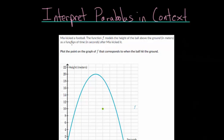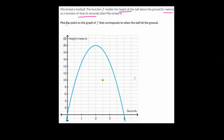Mia kicked a football. The function f models the height of the ball above the ground in meters as a function of time in seconds. So it's height for our function, and time for our independent variable. You're going to see this type of graph pretty much any time you have projectile motion. If you've learned this in physics, when you throw a ball or shoot a cannon or throw anything through the air, it's going to travel in pretty much a perfect parabola, but not exactly because of air resistance.